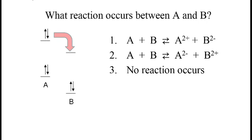Then we have to decide what the products are. Since A is losing electrons, it will go more positive. B is gaining electrons, so it will go more negative. That leaves answer number 1 as our prediction.